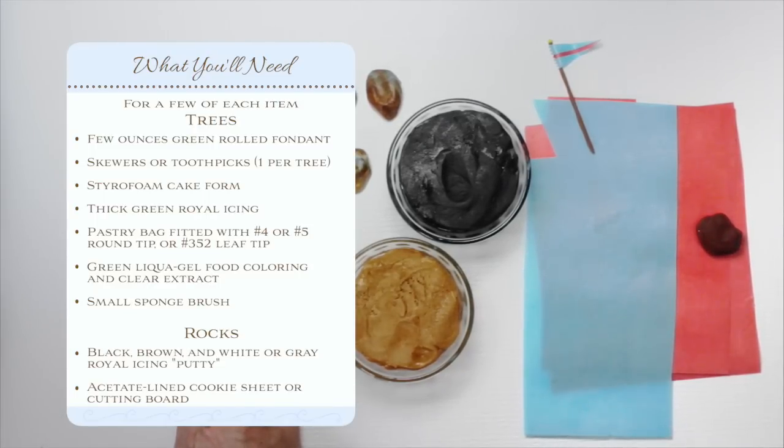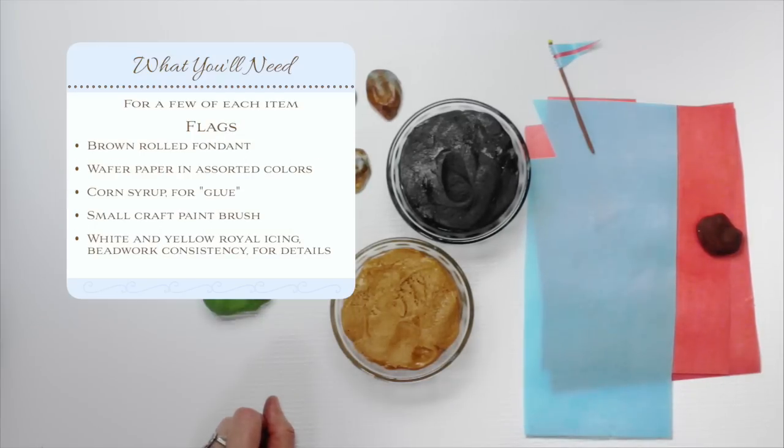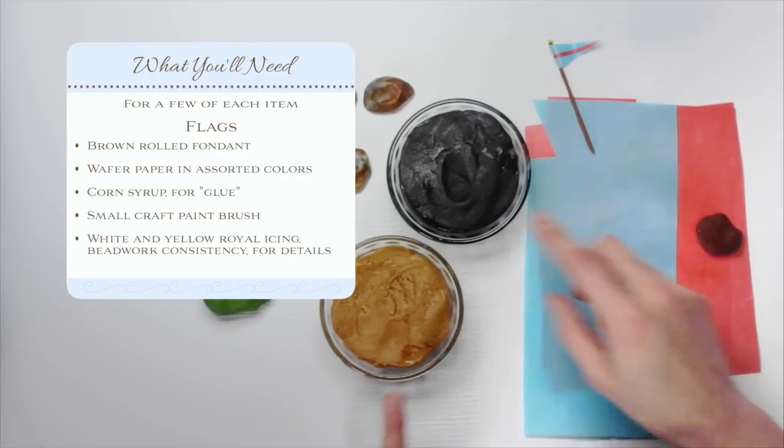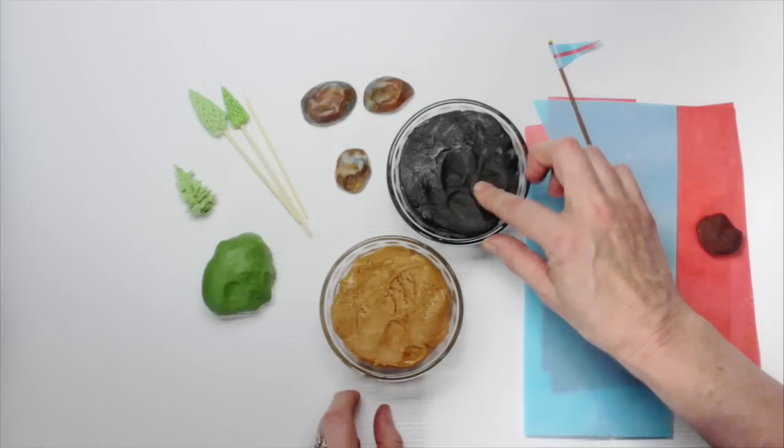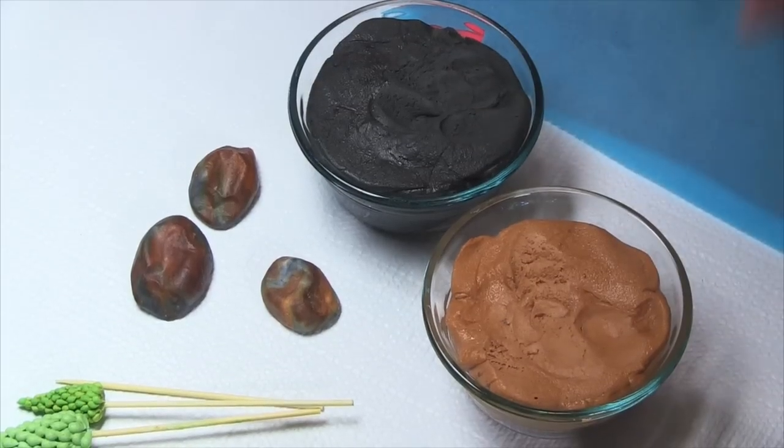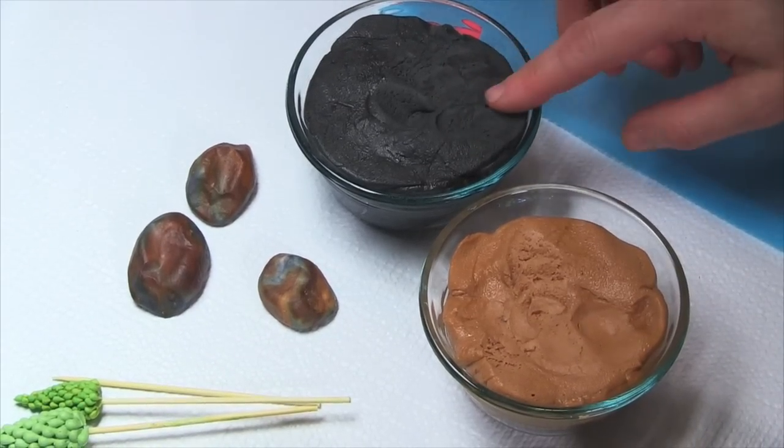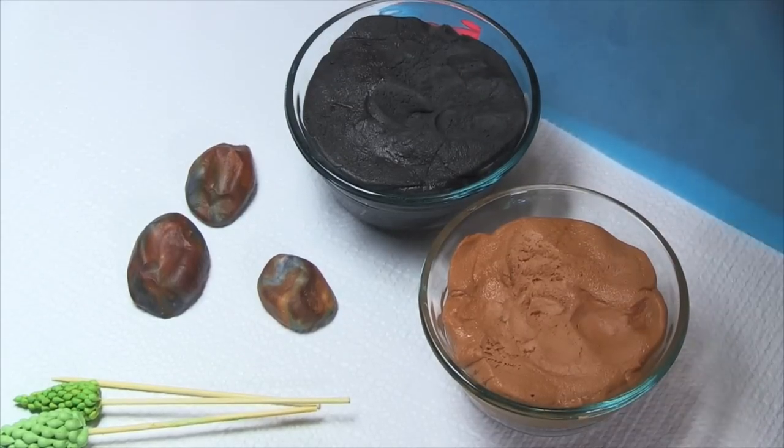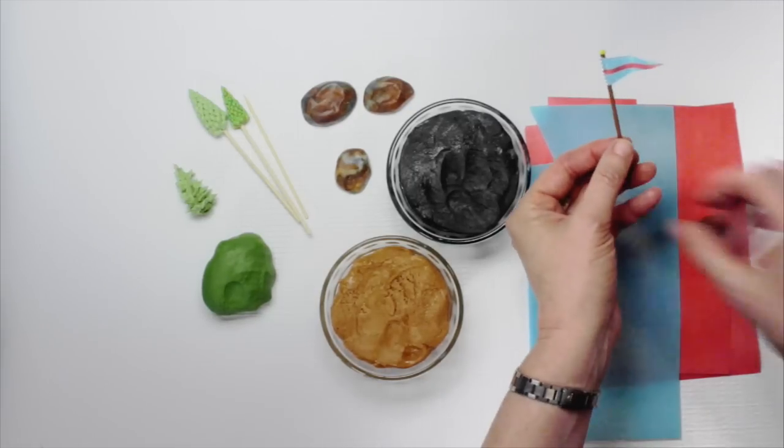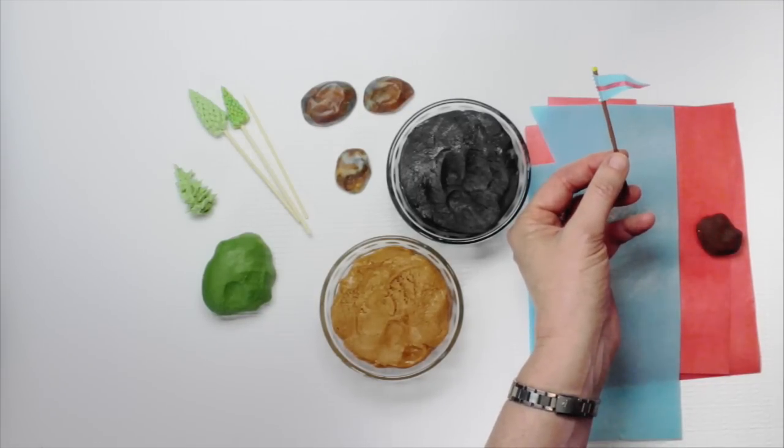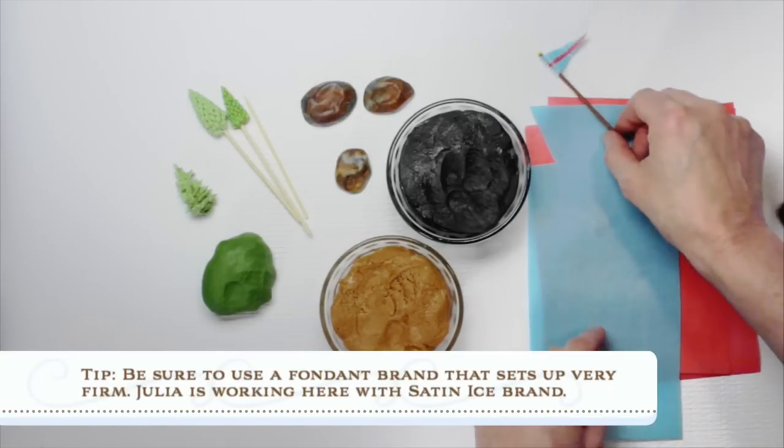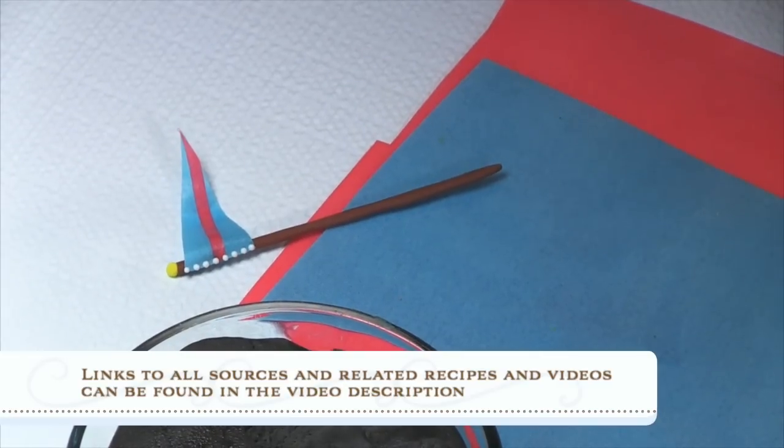For the trees you're going to need a little bit of green fondant to make the central core, some royal icing to pipe the leaves, and some toothpicks for holding them in place while you're piping. For the rocks, you just need really thick royal icing tinted two or three shades - a really dark tone, a medium brown, and maybe a white. And lastly for the flags you'll need a little bit of brown fondant for the flagpole, and some wafer papers. I like to use two colors for the flag.